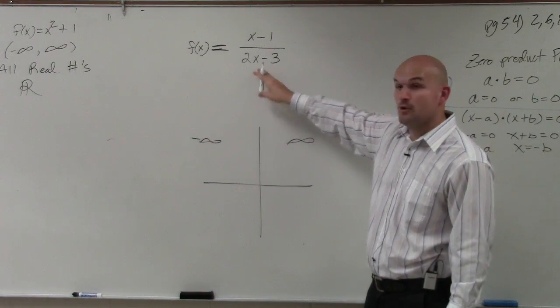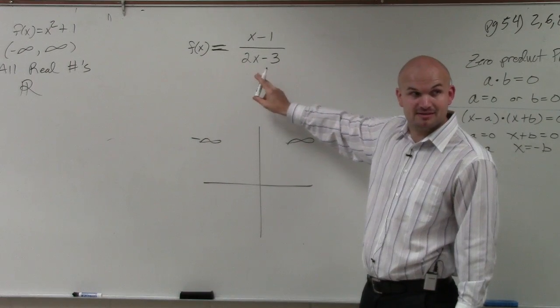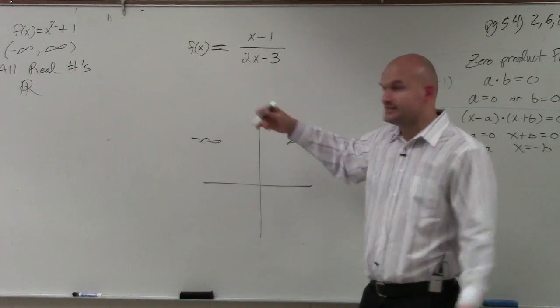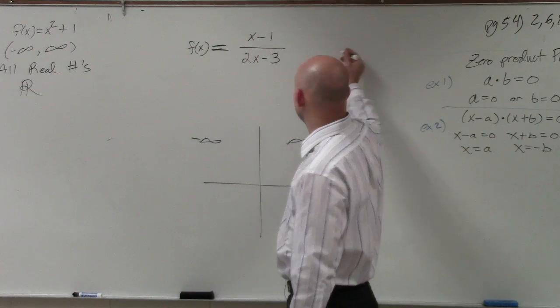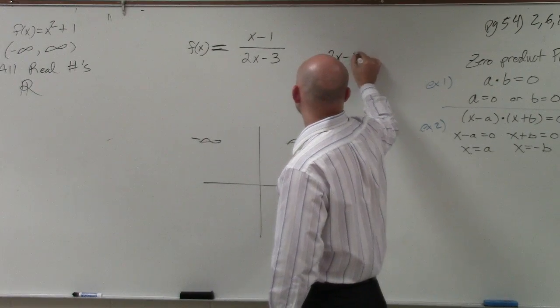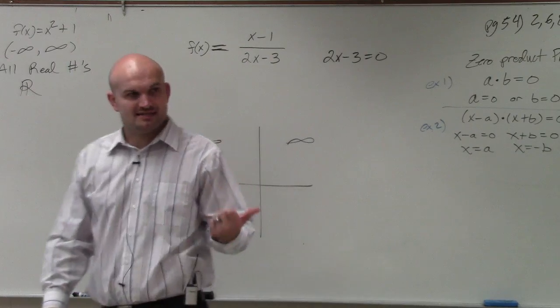So I have a variable in here. I need to figure out what number makes my denominator equal to 0. The easiest way to do that is to take out the denominator and just set it equal to 0 so I can find the value of x that does that.